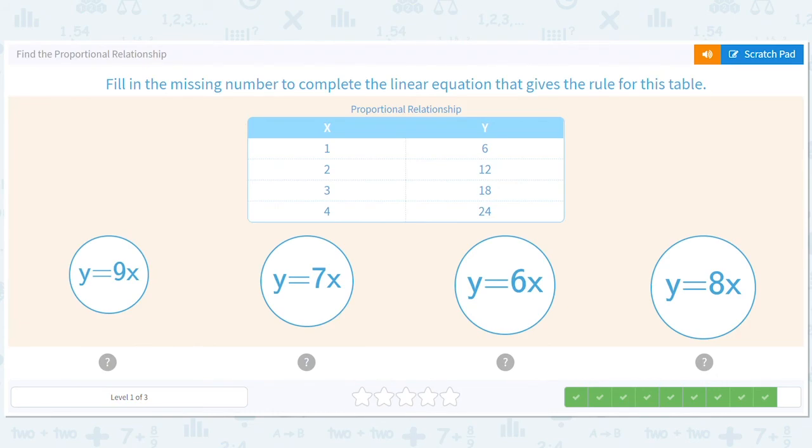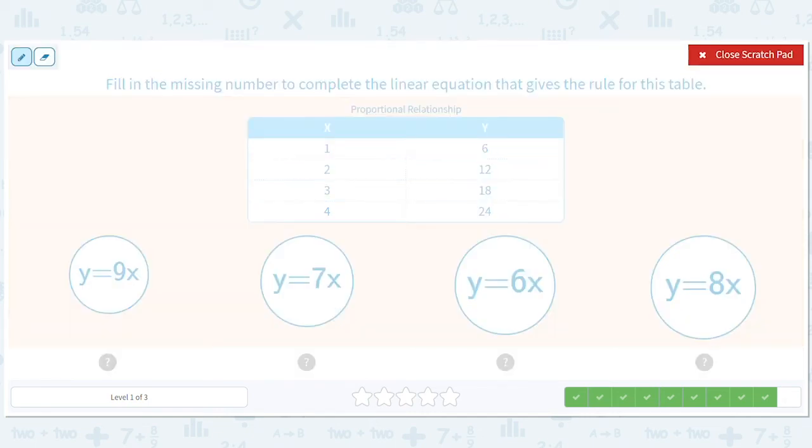Okay. When x is 1, y is 6. So we're multiplying by 6. When x is 2, y is 12. So we're multiplying by 6. Another observation is every time x goes up by 1, y goes up by 6. It's plus 6, plus 6, every time. So it's another way to see the 6.